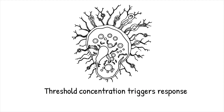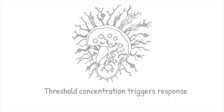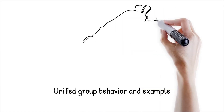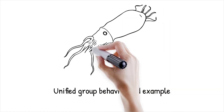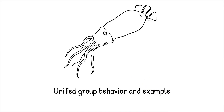This allows bacteria to regulate activities that are more effective when performed collectively, such as biofilm formation, virulence factor production, and bioluminescence. Quorum sensing enables bacteria to behave as a unified group, functioning almost like a multicellular organism, rather than as individual cells.